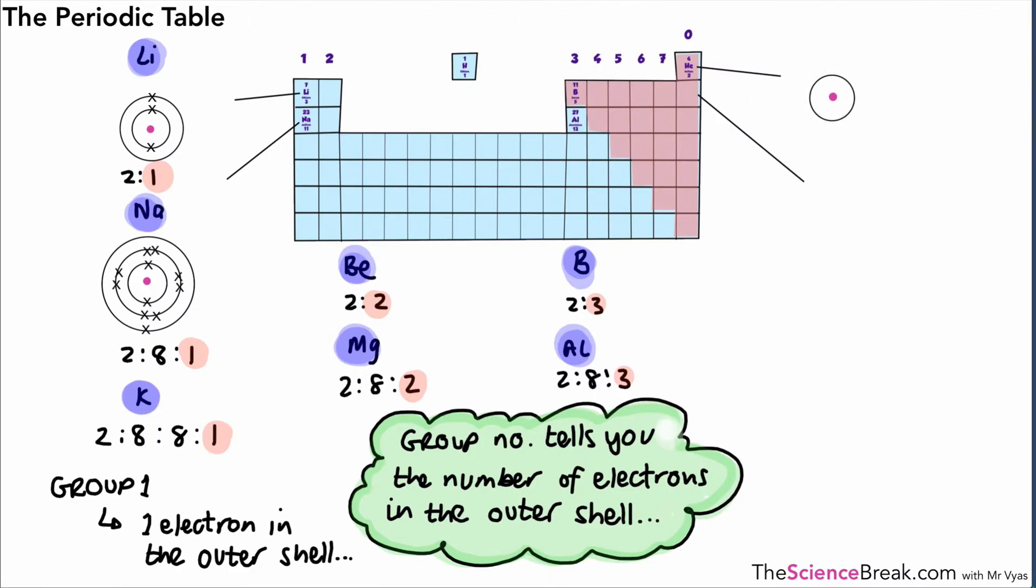We need to look at the details of group 0. The first element in group 0 right at the top is helium. That has two electrons. So the electron structure is just two. And in fact, that's a full outer shell. The first shell can only take two. If we look at the second atom or the atoms of the second element, we will see that it's 2, 8.